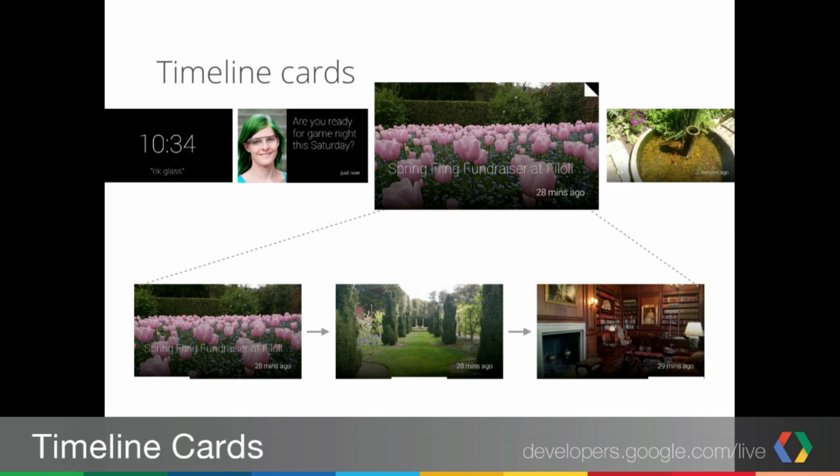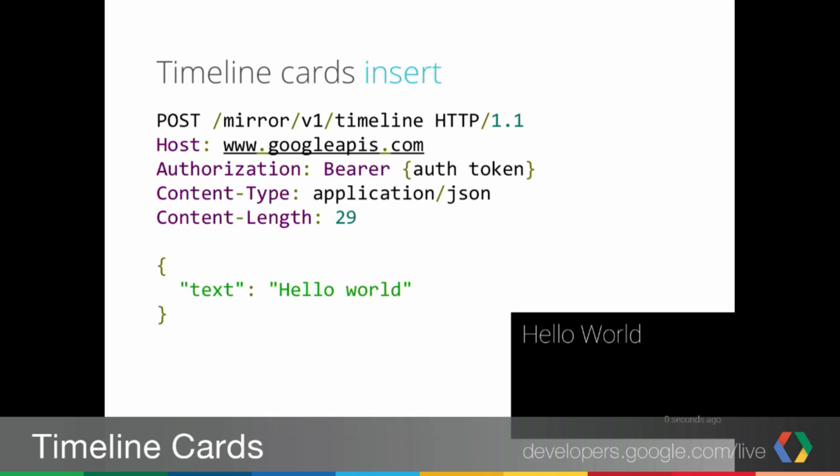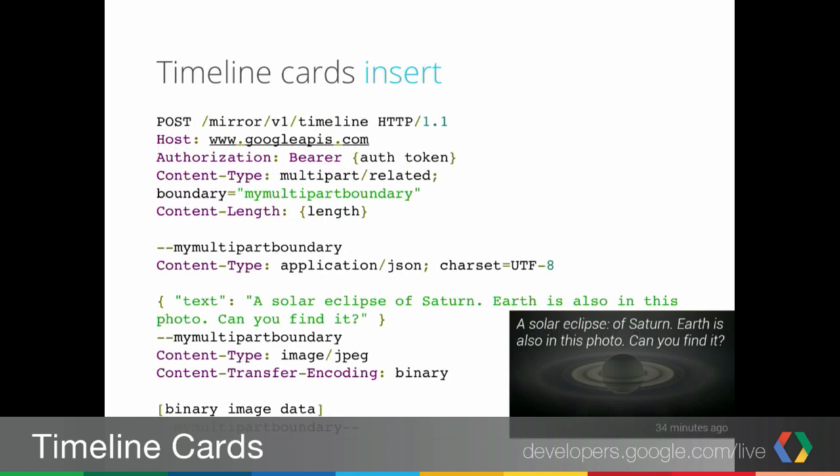Now let's look at all of that in code. A simple timeline insert looks like this — I just add some text and do a POST request on the timeline collection. If I were to do an image, it'll look like this. Again, a POST request on the timeline collection, but in this case it's a multi-part request with the image data added.